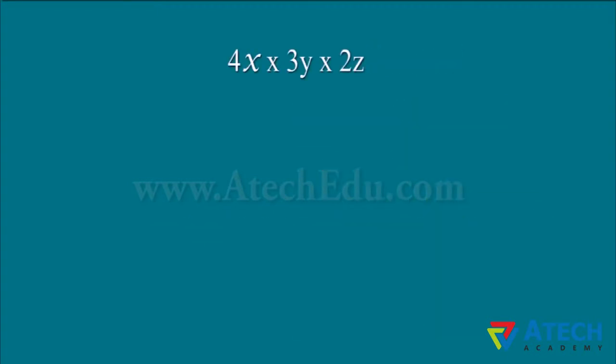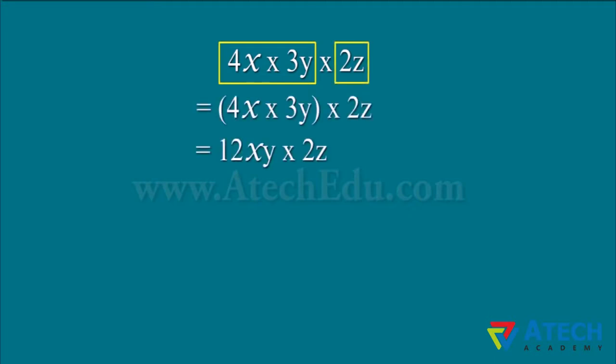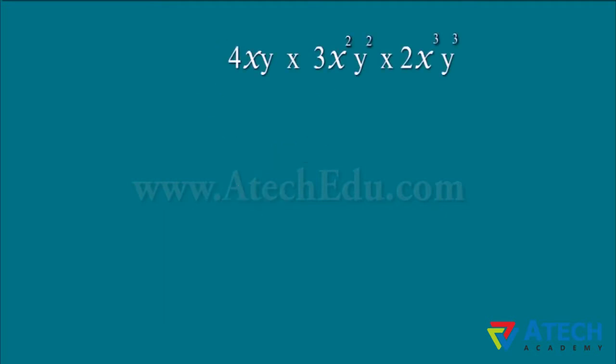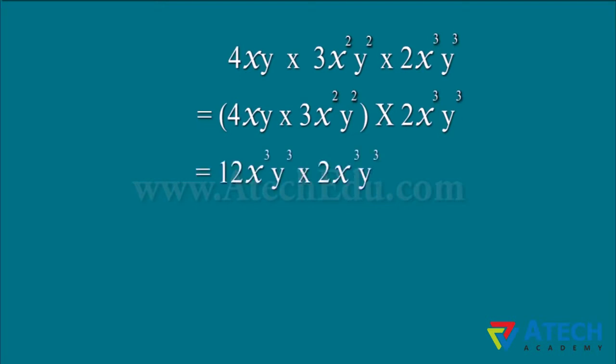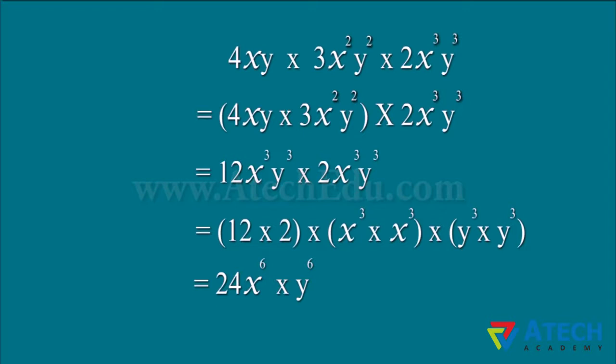Now let us observe how we can multiply three or more monomials. We will multiply the first two monomials and then multiply the resulting monomial by the third monomial. This method of multiplication can be extended to the product of any number of monomials. In this example also, the first two monomials are multiplied and then the resulting product is multiplied with the third monomial to get the final result.